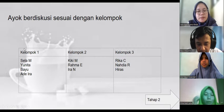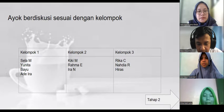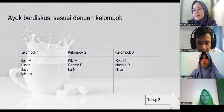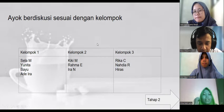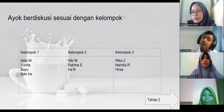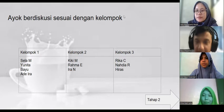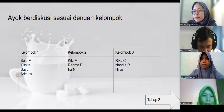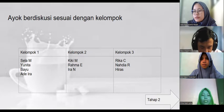Kelompok satu ada Sela, Yunita, Bayu, dan Ira. Kelompok dua ada Kiki, Rahma, Ira. Lalu kelompok tiga ada Rika, Nadia, dan Hiras. Baik, ada pertanyaan? Tidak, Bu. Jika tidak ada pertanyaan, kita coba diskusi ya.